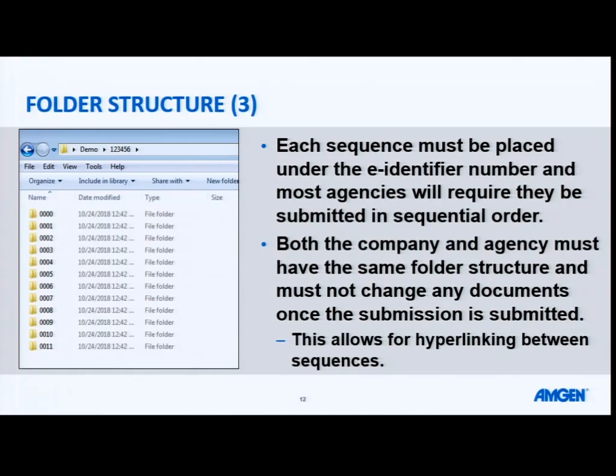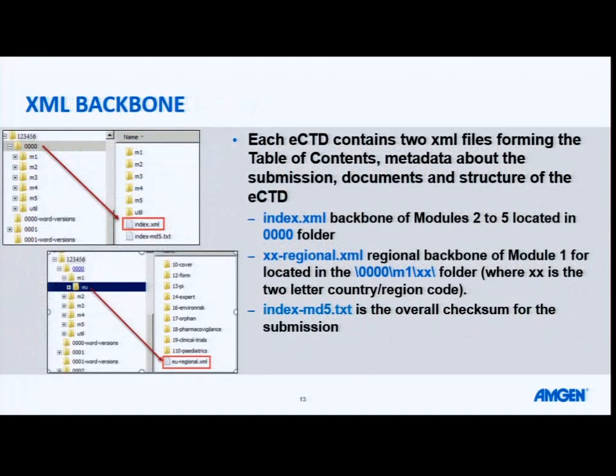Both the company and the agency must have the same folder structures on their computers. This must not change documents once they have been submitted. This allows for the benefits of life-cycling, which I'll talk about in a moment. It allows you to hyperlink and refer back to previously submitted content. Each eCTD sequence contains two XML files, and they form the table of contents for your submission.